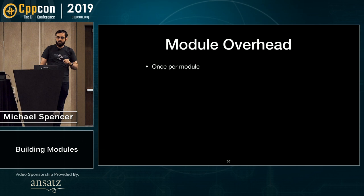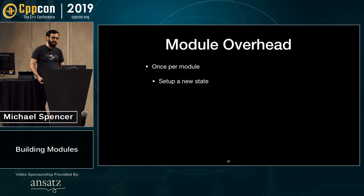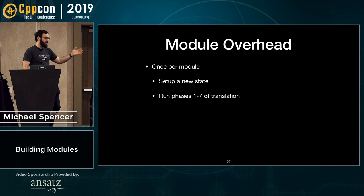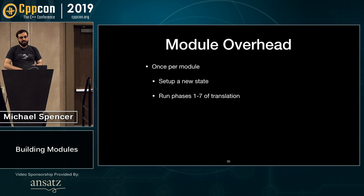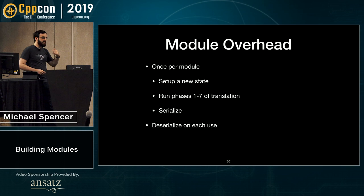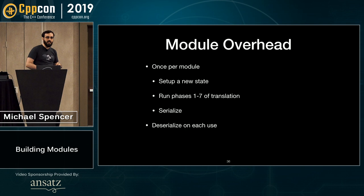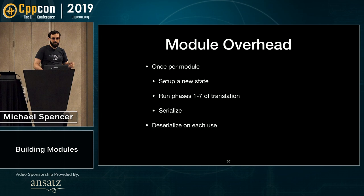What's the overhead per module? Once per module — not per use — you set up new compiler state including preprocessor and AST, run phases one through seven of translation (from mapping source bytes through preprocessing and template instantiation, but not linking), then serialize and write to disk. Deserialization on each use is very cheap. All compilers are doing lazy loading, so the load cost is not dependent on the size of the module — it's pretty much constant, based on the number of imports.